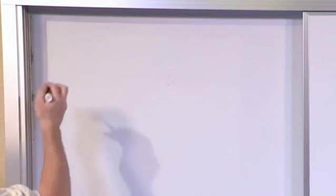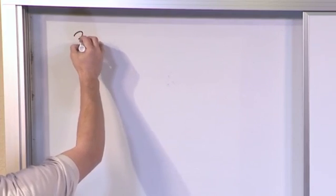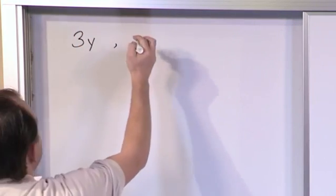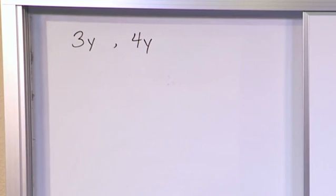Let me show you what I mean by that. It's much easier to give an example than just to talk about it. So, forget about polynomials for a second. Let's just say I have 3y, I'm going to put a comma here, and 4y. Let me ask you, are these terms like terms or not? Are they similar? The answer is yes.